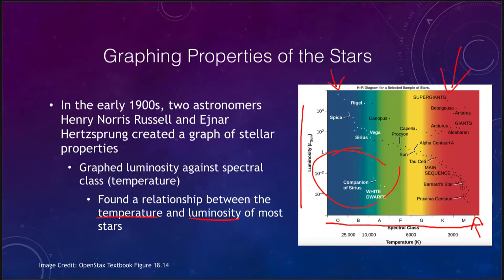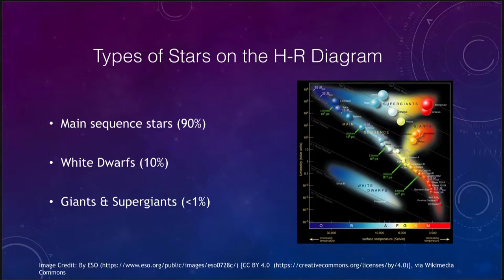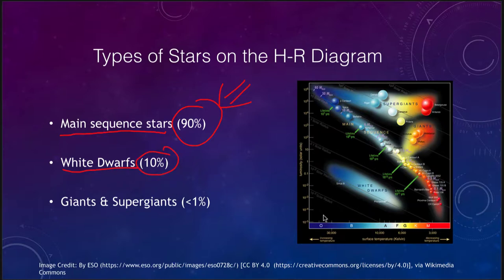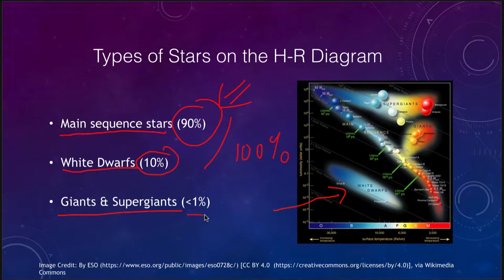When we look at an HR diagram, we find different types of stars. They are classified primarily as main sequence stars — 90% of the stars we see when we plot an HR diagram are main sequence stars. There are white dwarf stars, which are about 10%, and those fall down in the lower left hand side. And then there are giants and super giants, which due to rounding make up less than 1% of the stars.